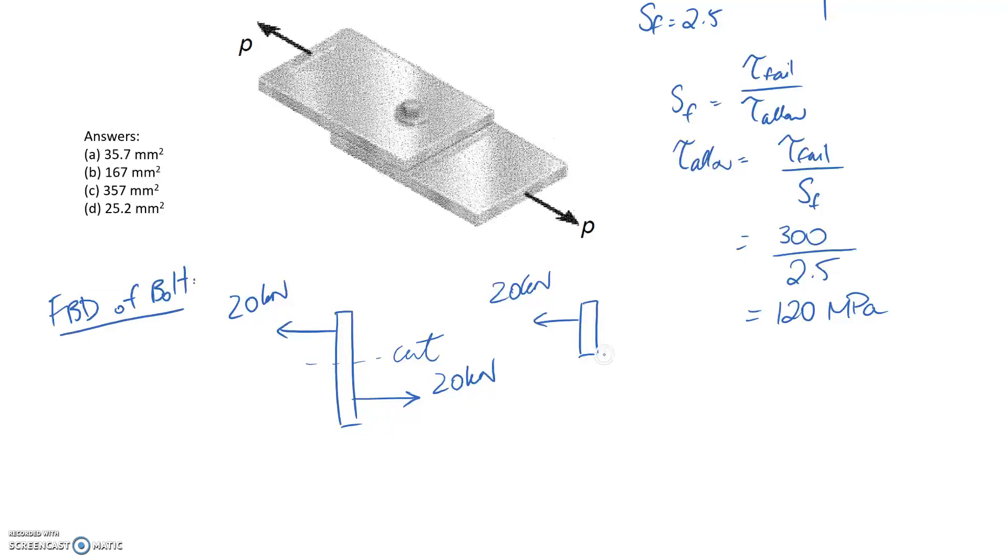So carrying it across, we have the 20 kilonewtons. And then we've cut it off, which is where this is. So we've exposed the internal force, and the shear one is V, and that's the one we're interested in. So we know on this diagram, the sum of the forces have to be equal to zero for it to be in equilibrium. So that's going to mean V, the internal shear, has to be equal to 20 kilonewtons.